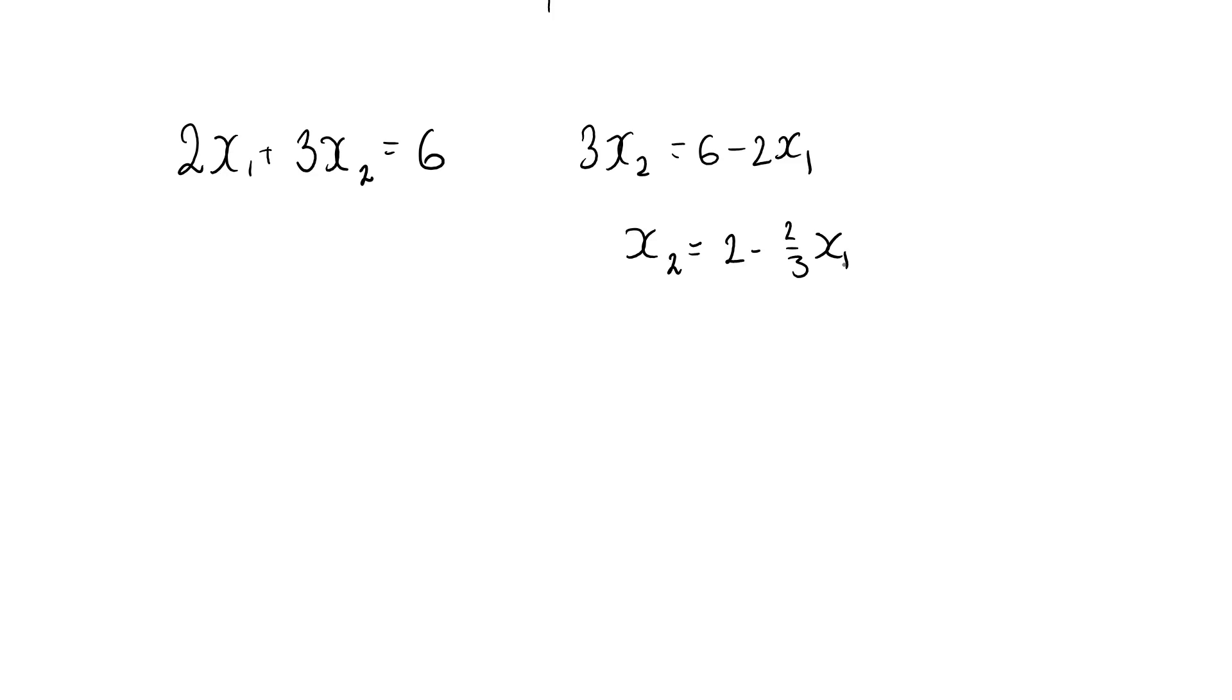Then we have x2 equal to 2 minus 2 thirds x1. Now we have x2 only in one position, and that's on the left hand side. So this is an explicit relationship in x2. Once I know x1, I can just plug it into this relationship and find x2.